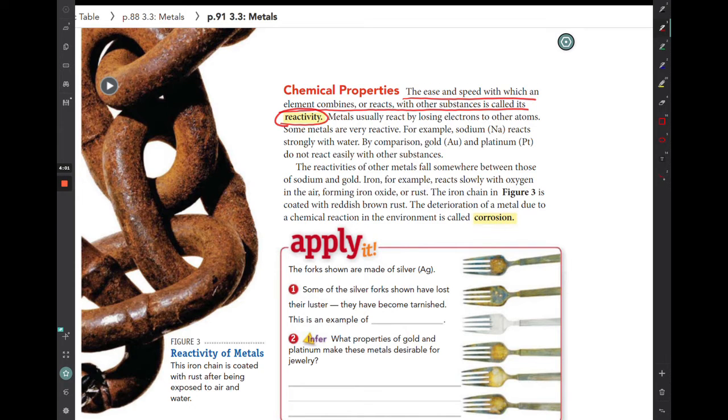Metals usually react by losing their electrons in their atoms, and some are much more reactive than others, sort of as you move across the periodic table. When a metal deteriorates over time due to the chemical reaction with the environment, that's called corrosion. And we've talked about examples of corrosion before. So rusting is an example of corrosion. Tarnishing is another example of corrosion as well.